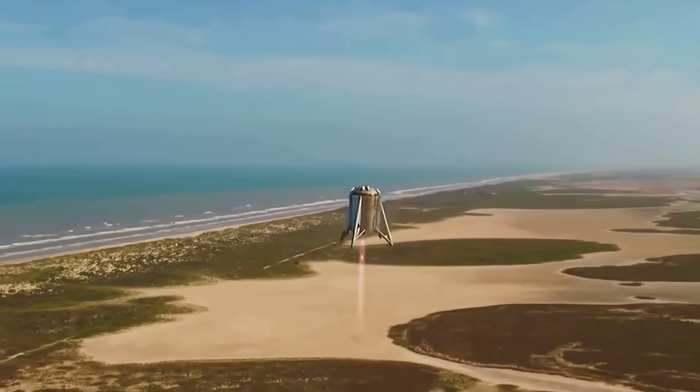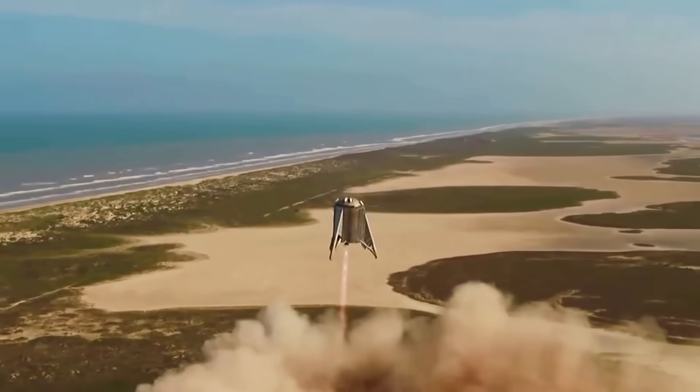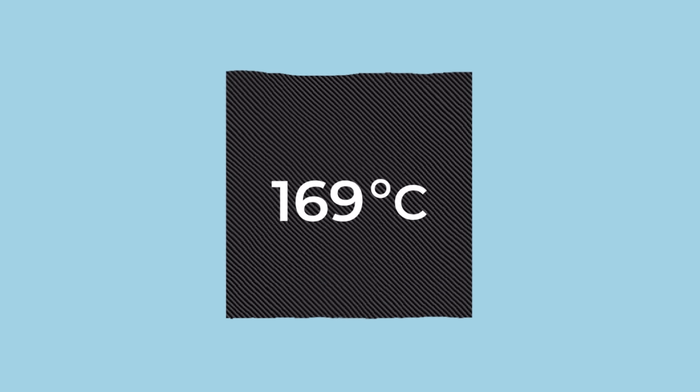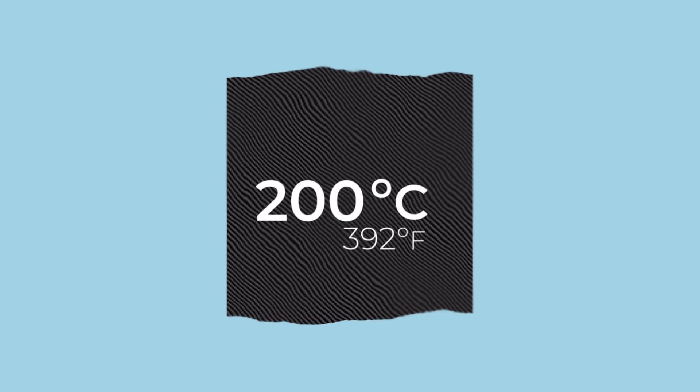But over time, people started to realize what a great decision this was. Although carbon fiber is very strong, it breaks down at around 200 degrees. Therefore, it would require a very thick heat shield in order to survive the 1600 degree temperatures during multiple re-entries.